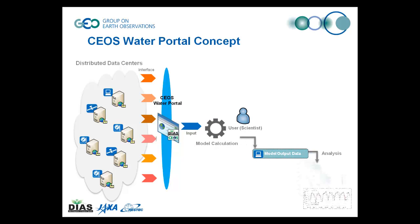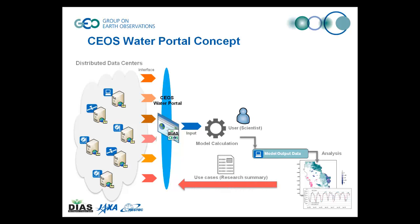Through a single user interface, users can easily discover and access the data that they need. The portal stores data senders' catalogues in its own database, and each server at distributed data senders in the portal are connected by OpenDAP or OGC web services for data access. The portal also has a feature that enables users to register use cases. Users register the results of their research achieved by using data via the portal as a use case, which then becomes available for other users to discover and view.